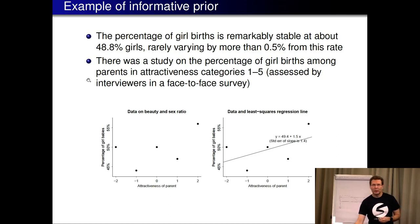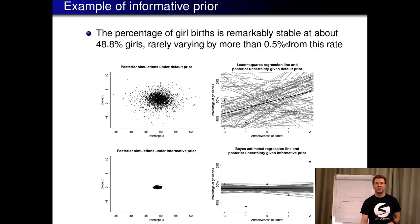So there was a study on the percentage of girl births among parents in attractiveness categories one to five assessed by interviewers in face-to-face survey. And here's the data. So we have just the data, we can fit linear model there. And then in this study they concluded that yes more attractive parents have more girl babies but they did not use any prior information and now we next look what happens if we use this. So here we have the posterior distribution with default weak prior and this is what it looks like many many different lines could explain the same data.